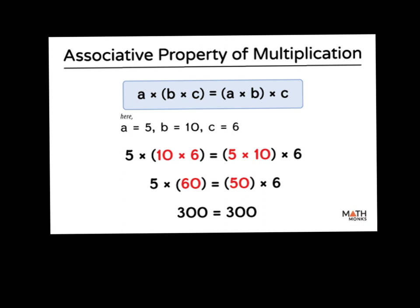The associative property of multiplication means that you can group the numbers in any order and they will still equal the same product. For example, with A = 5, B = 10, and C = 6, you can group it as 10 times 6 times 5, or 5 times 10 times 6, and you're still going to get the same answer of 300. That's the associative property — grouping numbers using parentheses in any way and still getting the same answer.